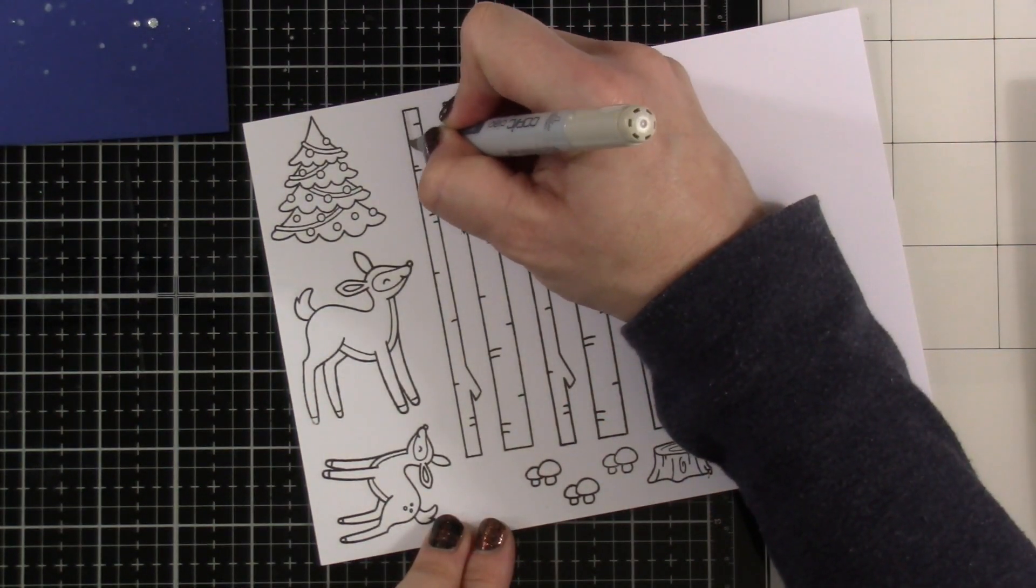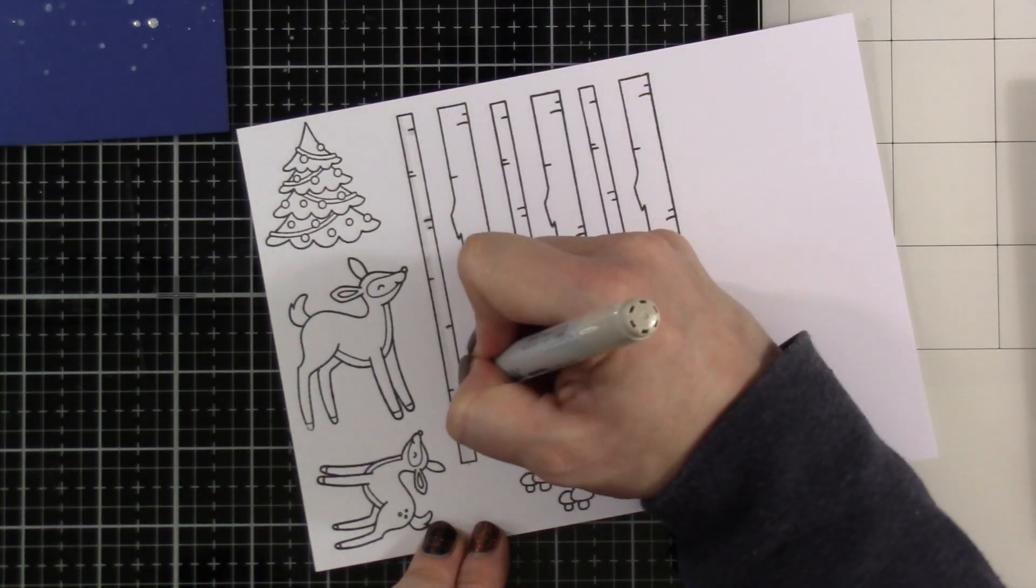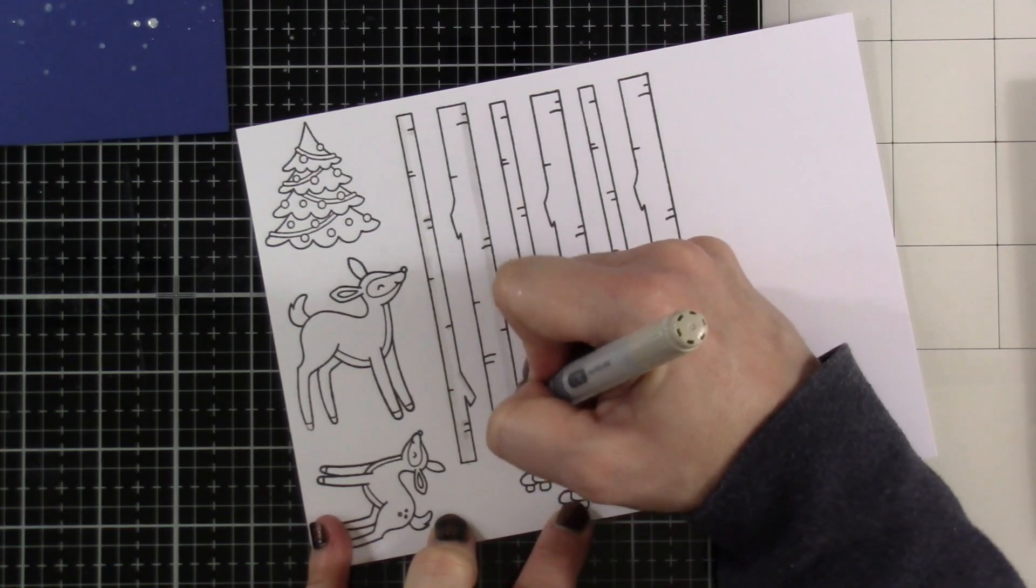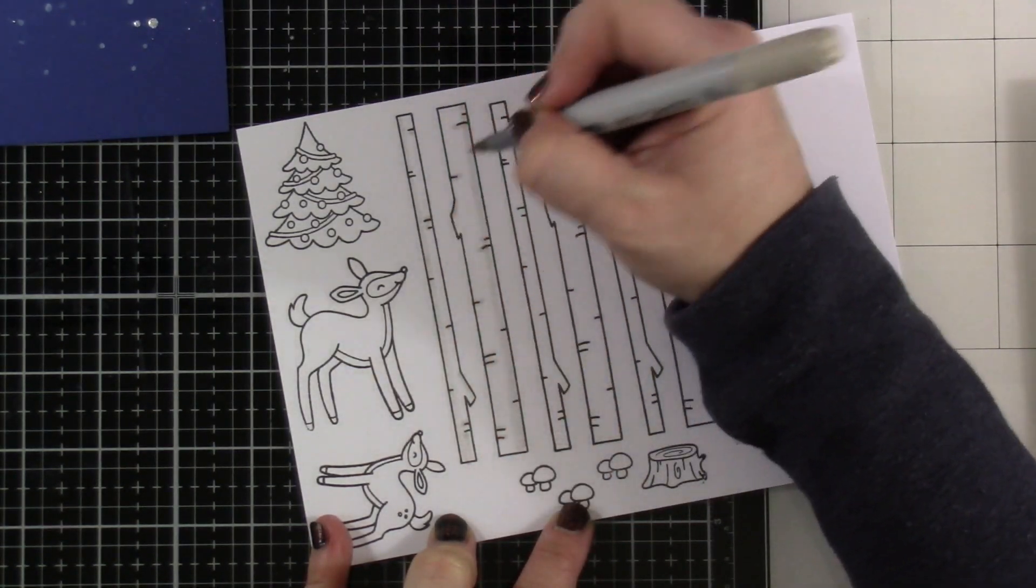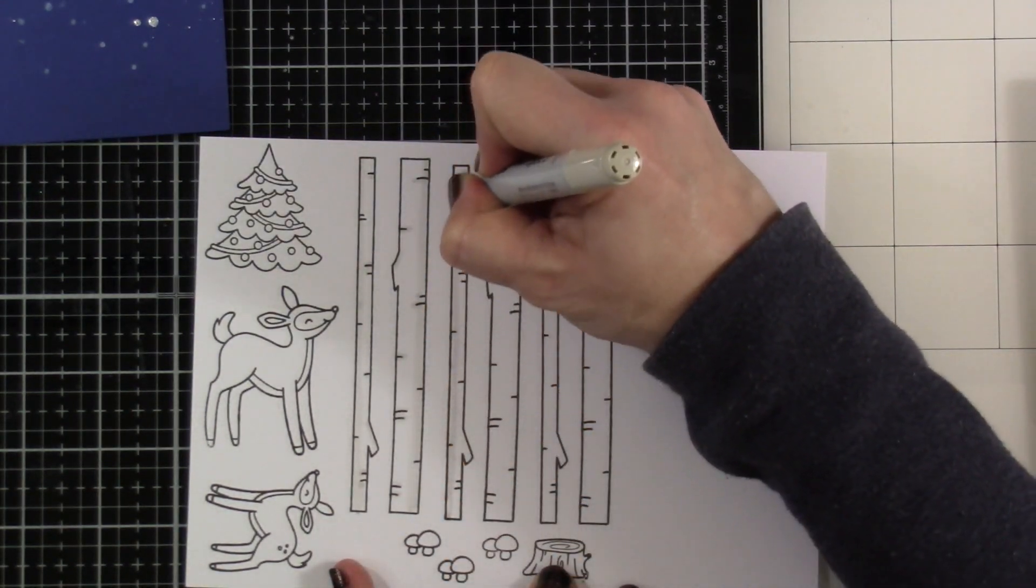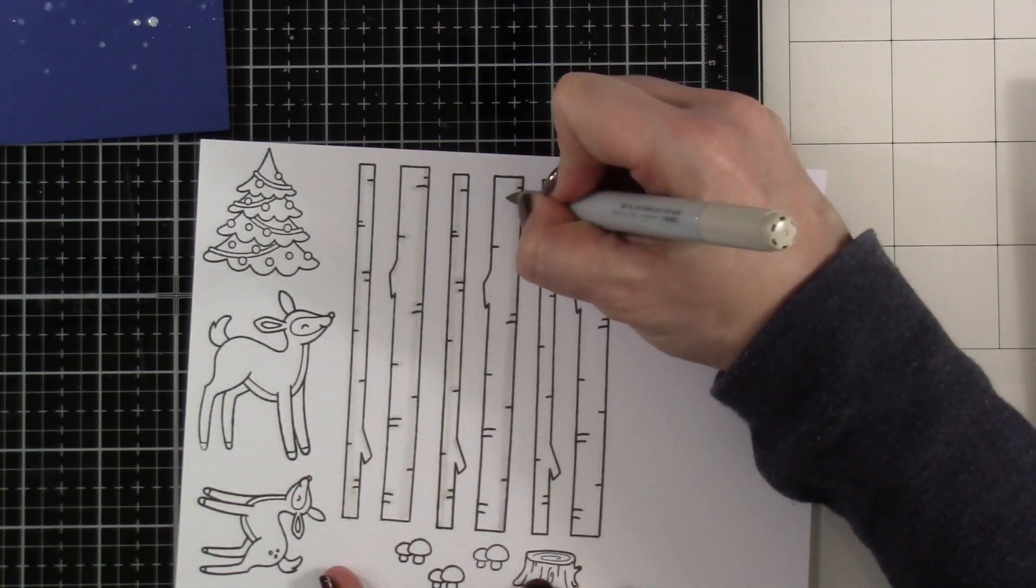I went ahead and stamped out all of my images that I used. Those come from the Dear To Me stamp set and the Want to Build a Snowman, and I stamped those on alcohol marker friendly cardstock because I am using my Copics. Right now all I'm doing is putting a line of color on these branches. I'm going to make them look like white birch and that's super easy to do.